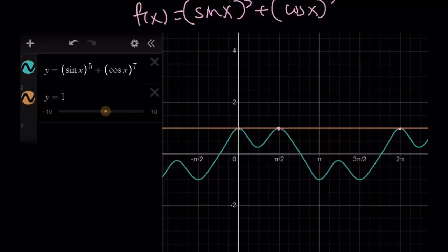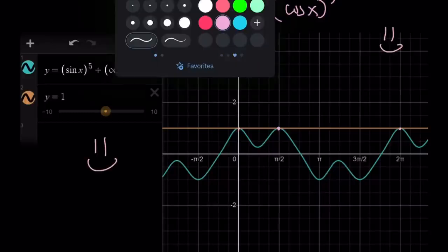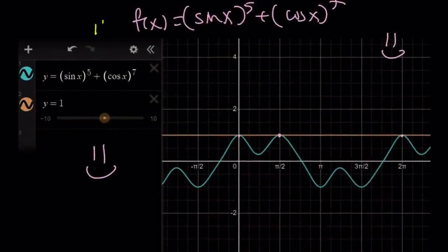Anyways, so the only solutions are zero and pi over two, if you're looking for something between zero to two pi. And this brings us to the end of this video. Thank you for watching. I hope you enjoyed it. Please let me know. Don't forget to comment, like, and subscribe. I'll see you tomorrow with another video. Until then, be safe, take care, and bye-bye.